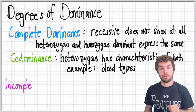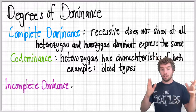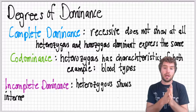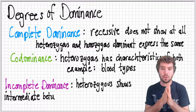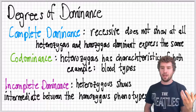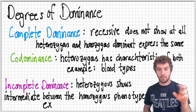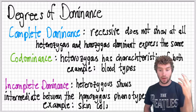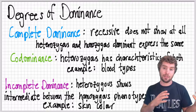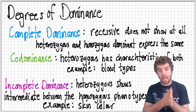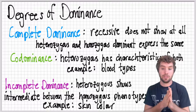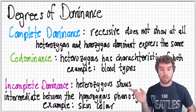Incomplete dominance, on the other hand, is where there's a mixing — an intermediary presentation between the two homozygous expressions. Things that express themselves in color are an example, like skin color and hair color. If someone with really dark skin has a child with someone who has really light skin, the child can have a tone that's not as dark as one or as light as the other — a mix of the two. That kind of thing is incomplete dominance.